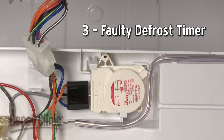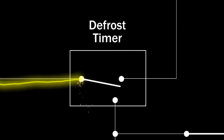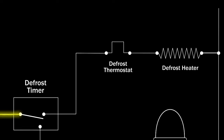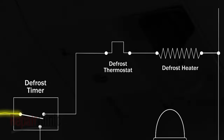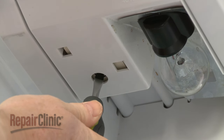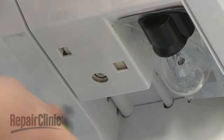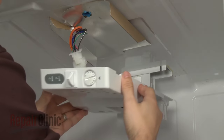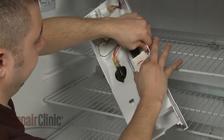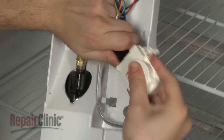Some models have a defrost timer, which turns the heater on for about 25 minutes, two or three times a day. A faulty timer may not advance into the defrost cycle or be able to send voltage to the heater during the cycle. Try slowly advancing the timer dial into the defrost cycle. The compressor should shut off and the heater should turn on. If the timer does not allow voltage to reach the heater or the timer does not advance out of the defrost cycle within 30 minutes, the component should be replaced.